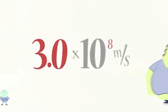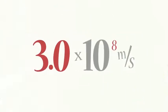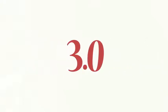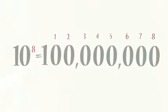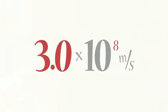Correct scientific notation requires that the first term range in value such that it is greater than 1 but less than 10, and the second term represents the power of 10, or order of magnitude, by which we multiply the first term.